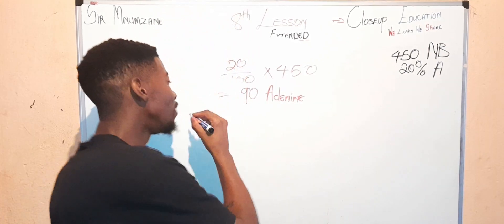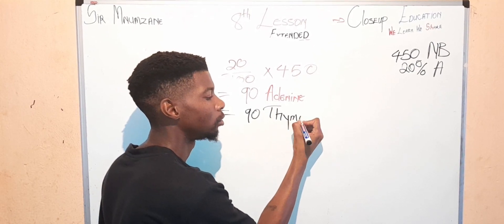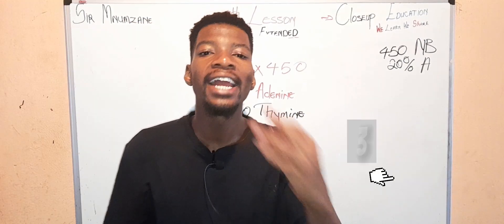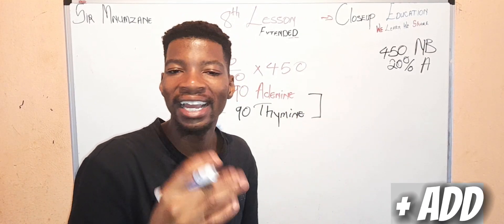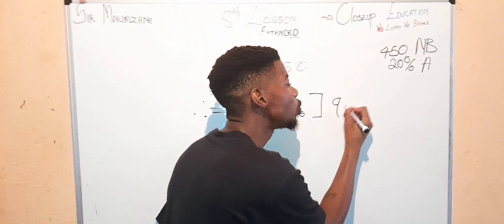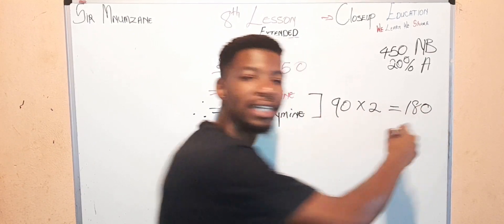If adenine is 90, that definitely means thymine is also 90. Therefore, thymine is 90. Our third step is to find the two pairing nitrogenous bases, which is going to be 90 times 2 equals 180.